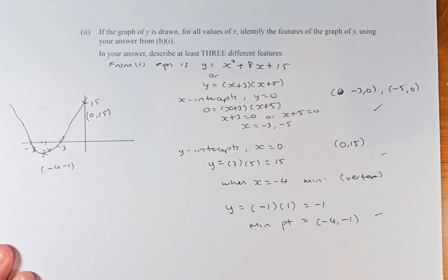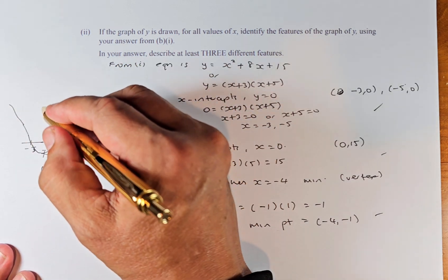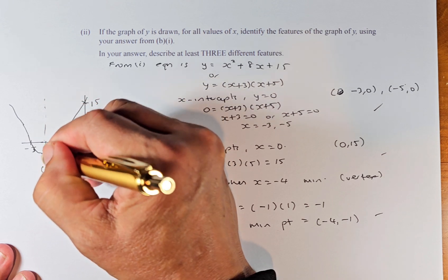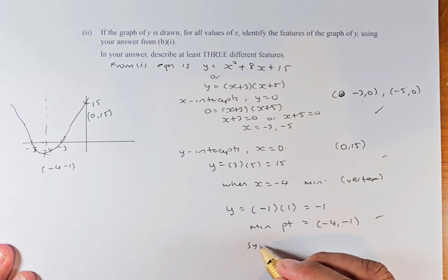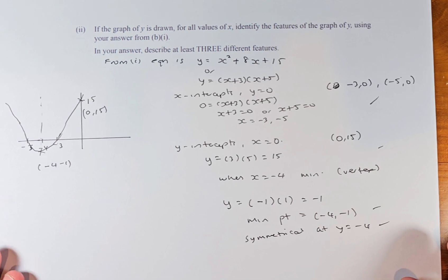Or if you want to take the fourth feature, the quadratic graph is going to be a U-shape, and also it's going to be symmetrical at Y equals negative 4. So there are the four features. I think we have more than enough, because they asked for three.